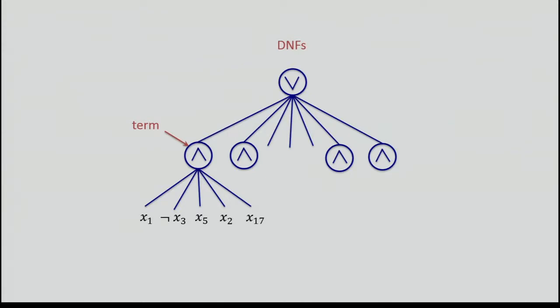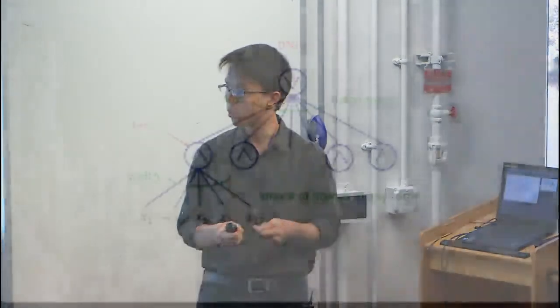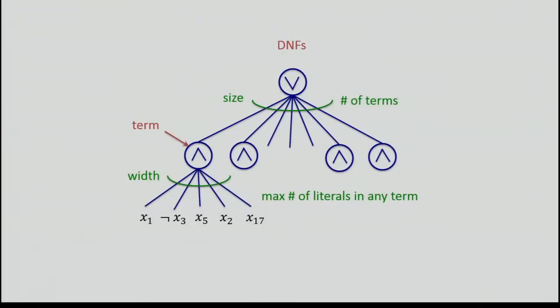I'm going to be concerned with two complexity measures of DNFs — two very basic ones: the size and the width. The size of a DNF is just the number of terms in the DNF. The width of a term is the number of literals occurring in the term, and the width of a DNF is the maximum width of any term occurring in the DNF.